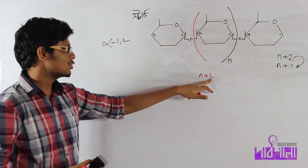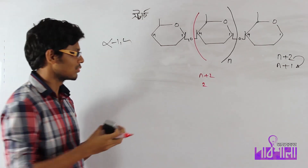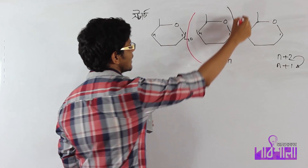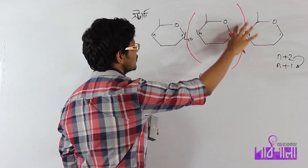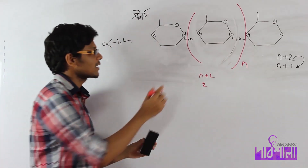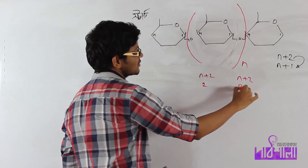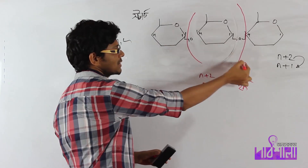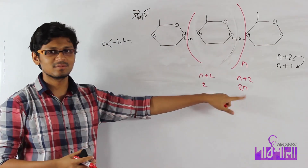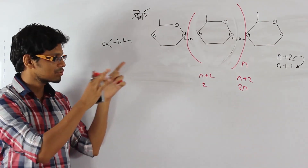If glucose is n, then glycosidic bonds are n minus 1. So if glucose equals 2n, then glycosidic bonds equal 2n minus 1, which is n plus 1 glycosidic bonds fewer. This is a common mistake students make.